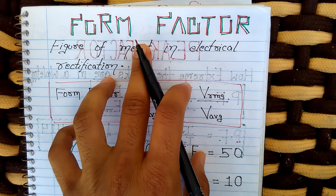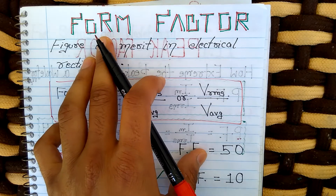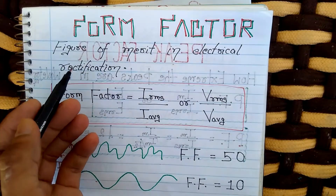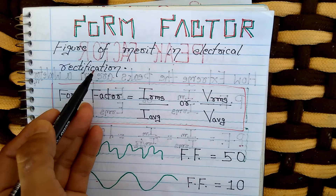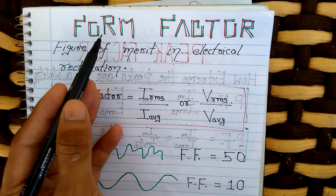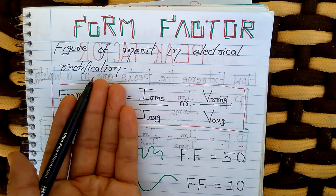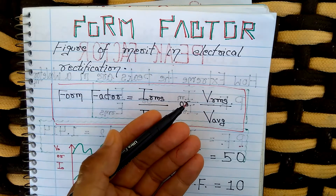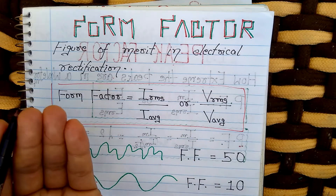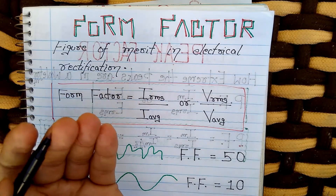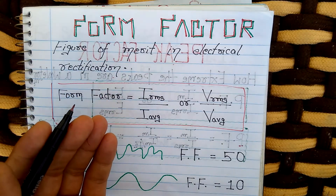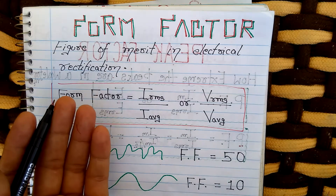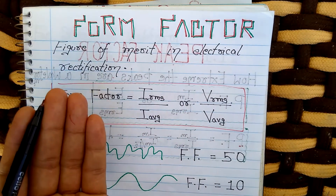Form factor tells you about the form — that is, the shape — of a waveform. The figure of merit in electrical rectification is denoted by form factor. If you are doing rectification, the form factor tells you how perfect your rectification has been done. Higher will be the number of ripples in your rectified waveform, higher will be the value of your form factor. As the value of form factor becomes closer to one, your waveform will be smoother.